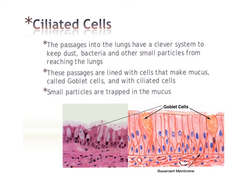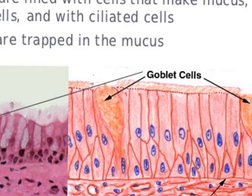This is about ciliated cells, also known as ciliated epithelial cells, which are found in the lungs. It's also about these green little cells here called goblet cells. What happens is these goblet cells make mucus — the snotty stuff — and these ciliated cells have got little hairs on them. It's a bit hard to see, let me make that bigger.